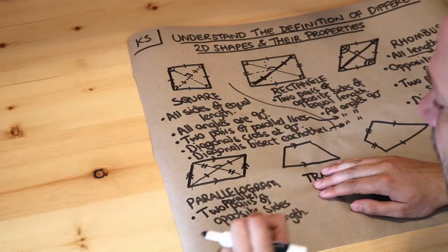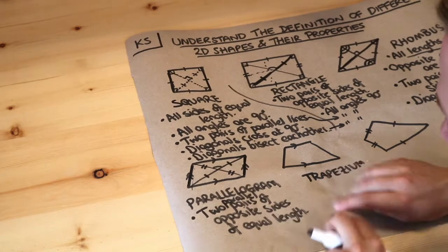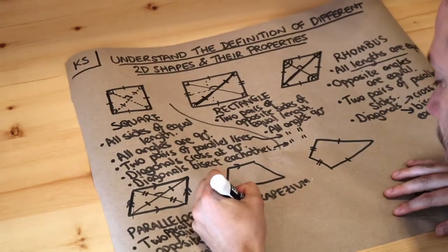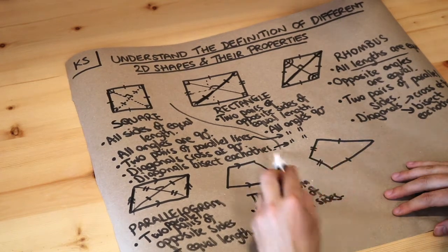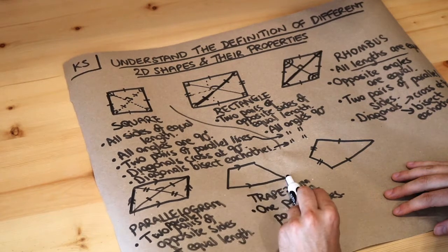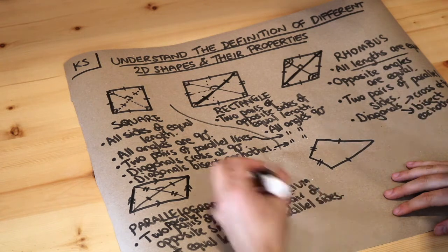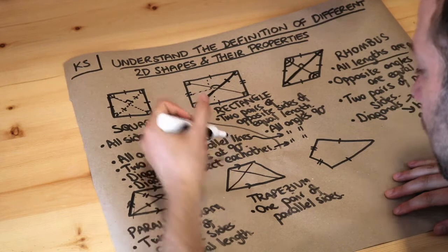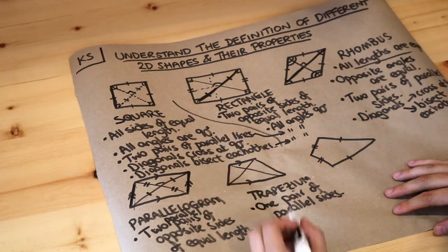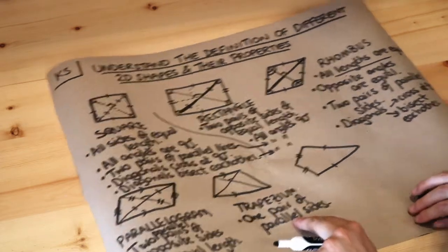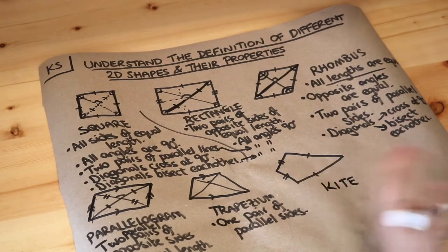The next shape is known as a trapezium. The definition of a trapezium is that it has one pair of parallel sides: the top side is parallel to the bottom, going in the same direction, but the other two sides are not parallel to each other. A trapezium doesn't in general have any other properties — for example, the diagonals don't bisect each other and don't cross at right angles. That's really the only general property of a trapezium.